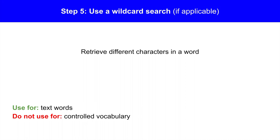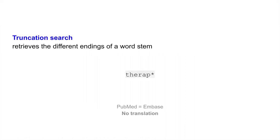Step 5: If applicable, use a wildcard search. Wildcards retrieve different characters in a word. Use wildcard searches for text words and not for controlled vocabulary terms. A popular wildcard is the truncation search, which retrieves different endings of a word stem. In PubMed, an asterisk symbol at the end of a word stem denotes truncation. It's the same in Embase, so no translation is required for truncation.